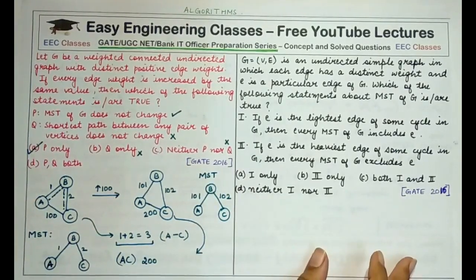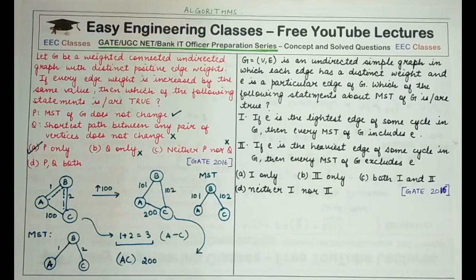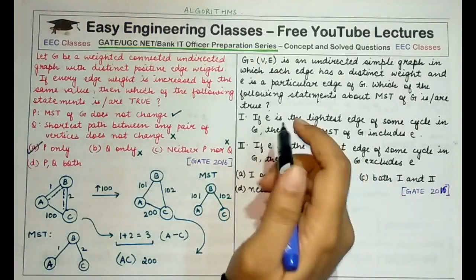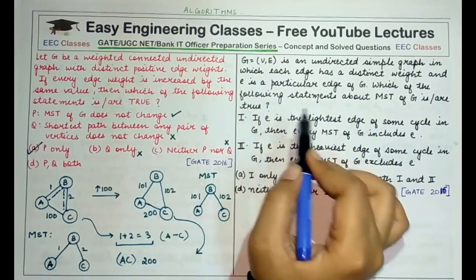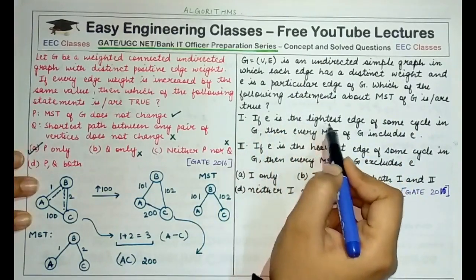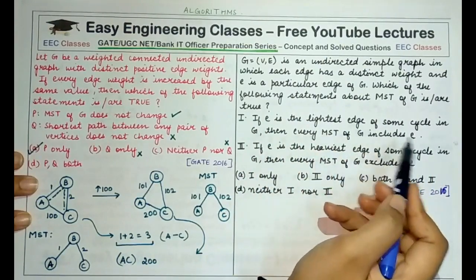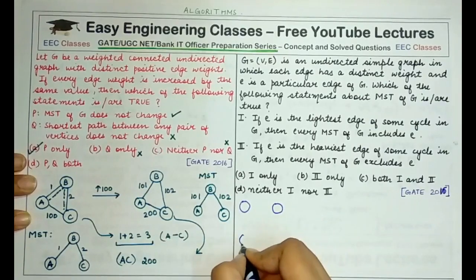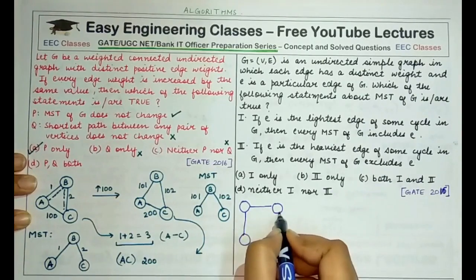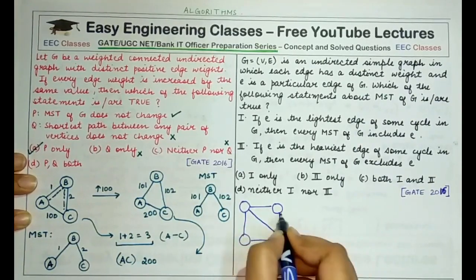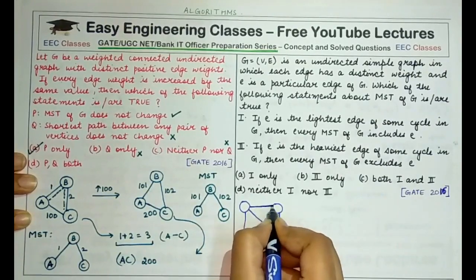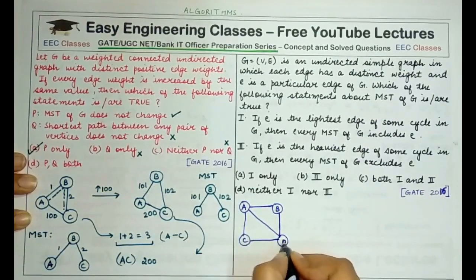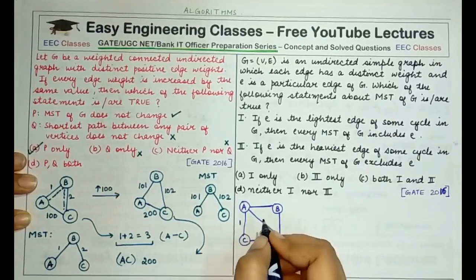The second question: let G = (V, E) be an undirected simple graph where each edge has a distinct weight and E is a particular edge. Which statements about the MST of G are true? Statement 1: if E is the lightest edge of some cycle in G, then every MST of G includes E. Let's take a simple example to check.